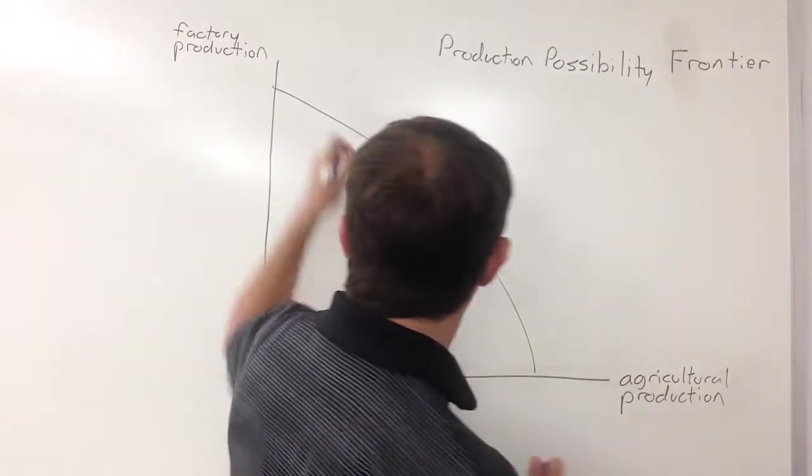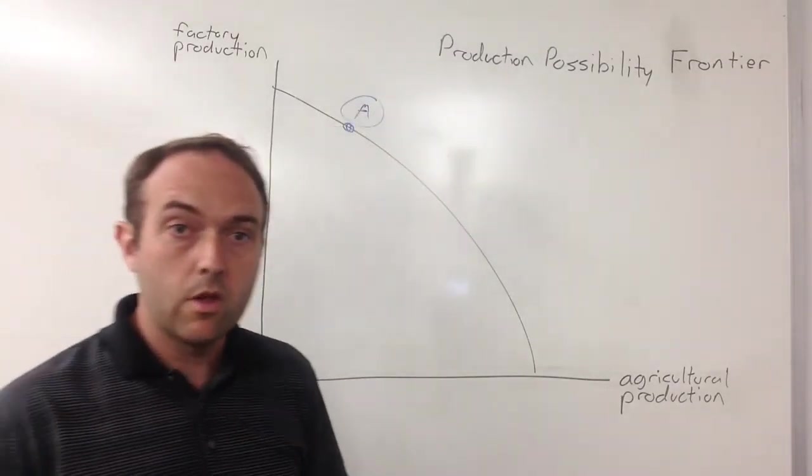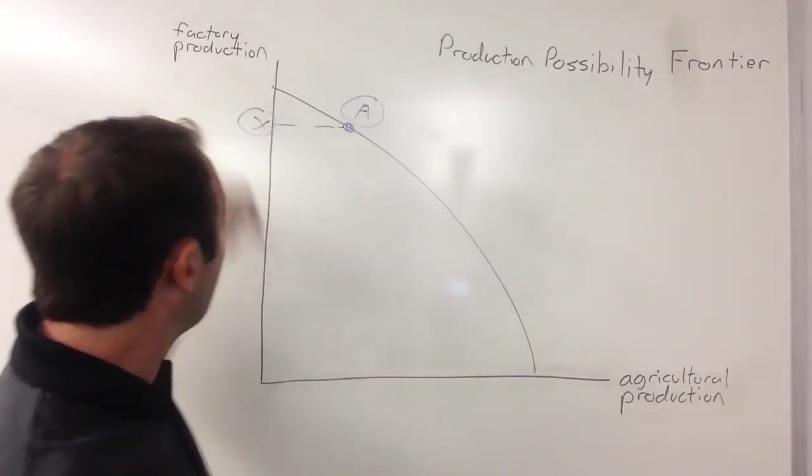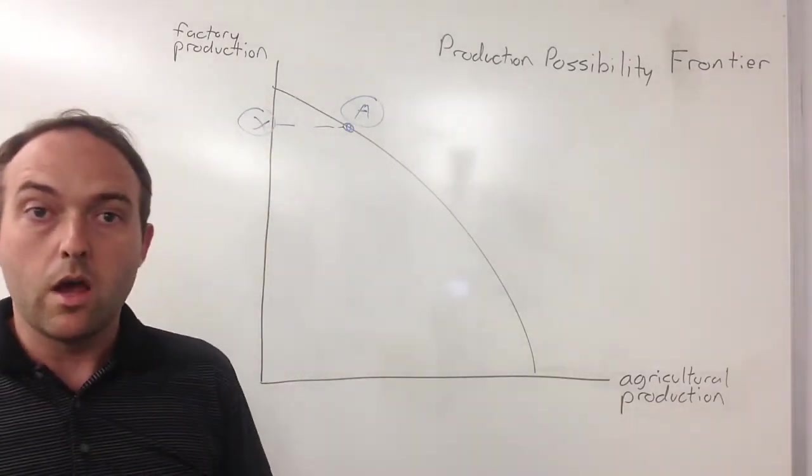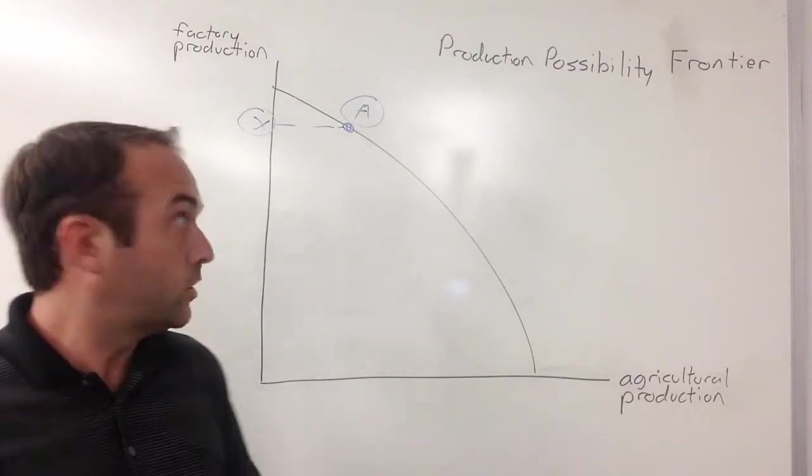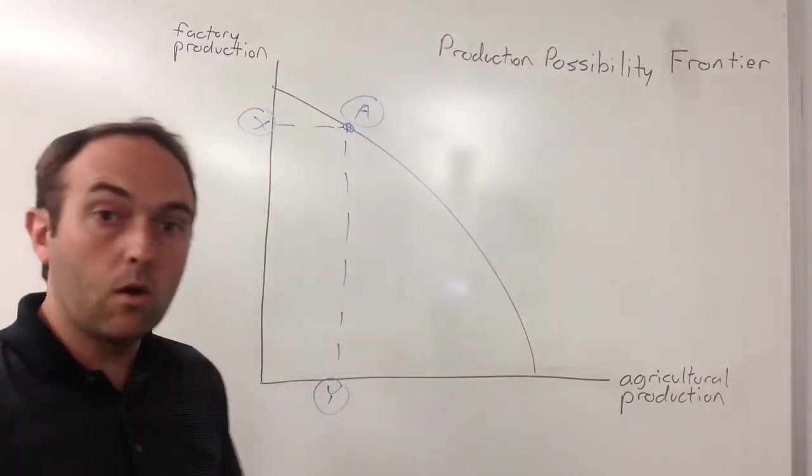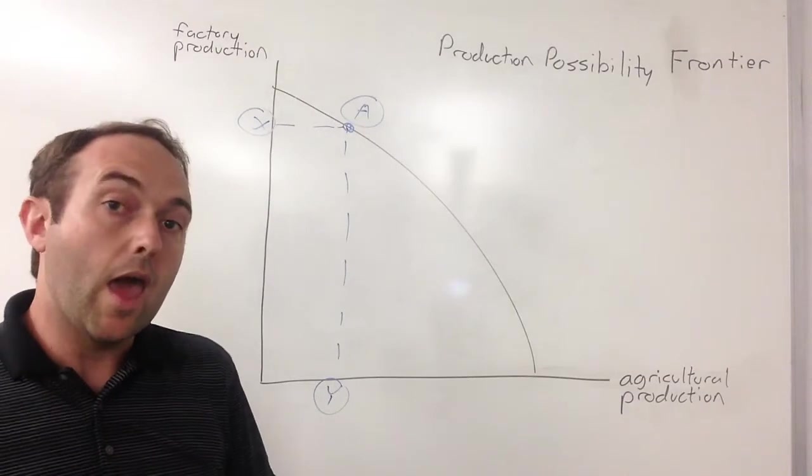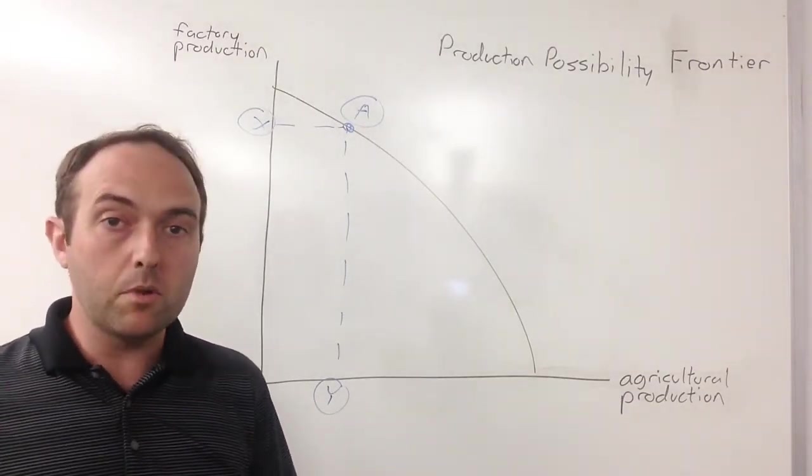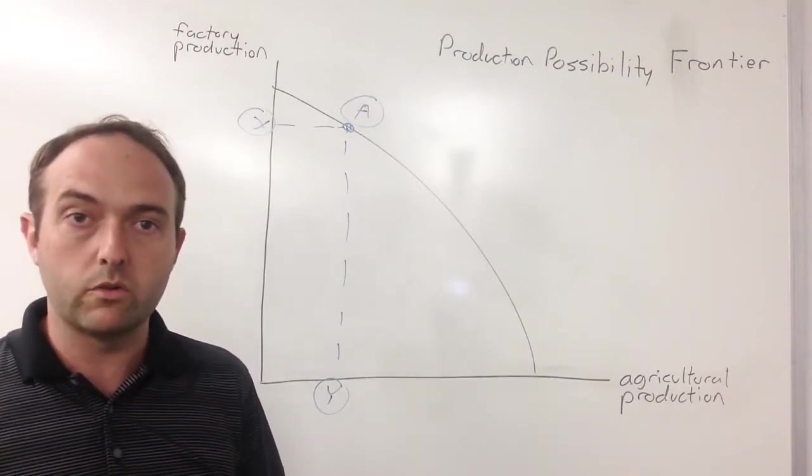For example, let's pick point A on this PPF. If a society were to choose to make this much factory production, x amount, and it used all of its remaining resources available to make agricultural productions, it could make y amount of agricultural goods. Every different point on the PPF represents the different combinations of products society could produce if it were to use all of its goods and services.